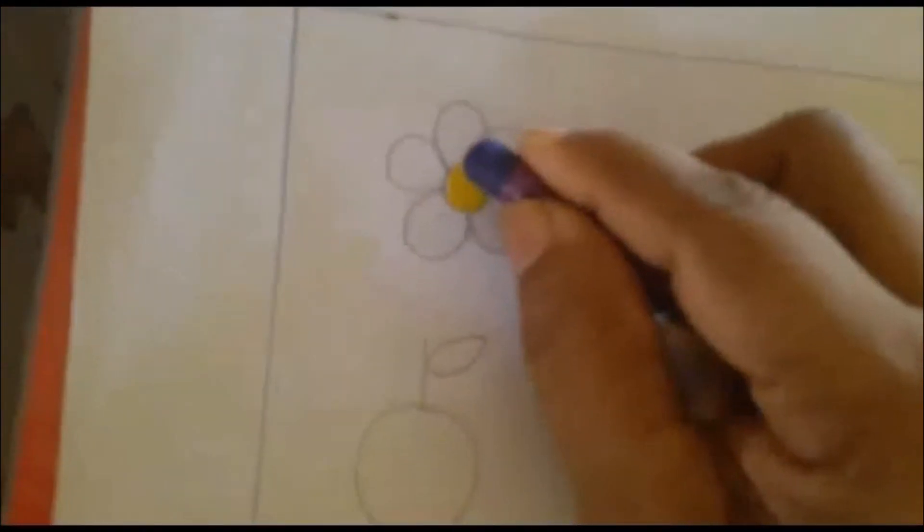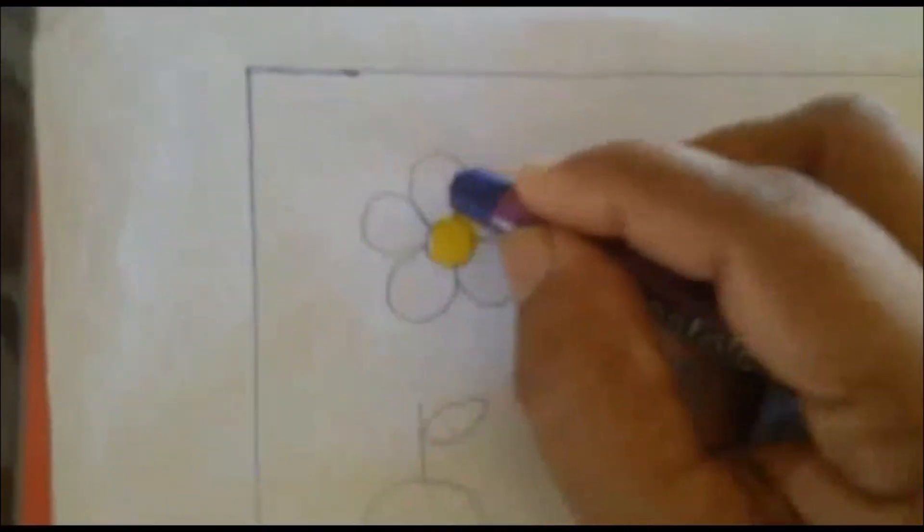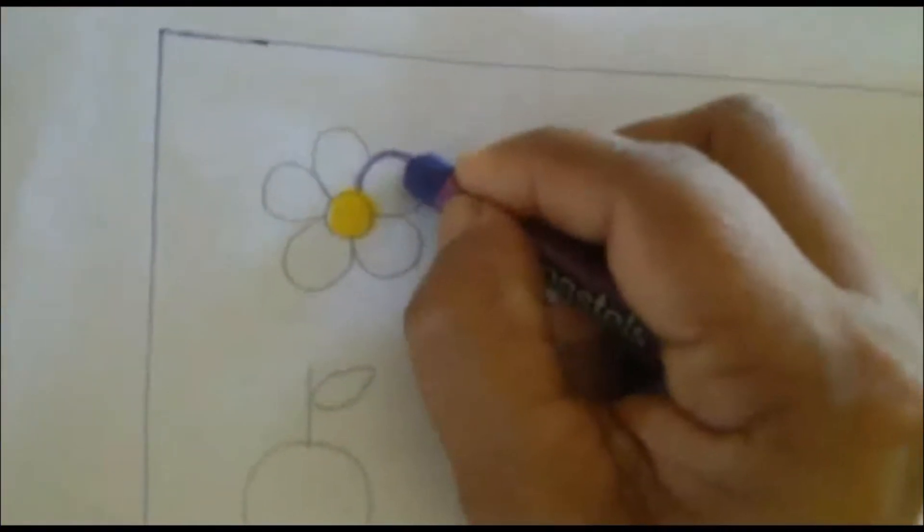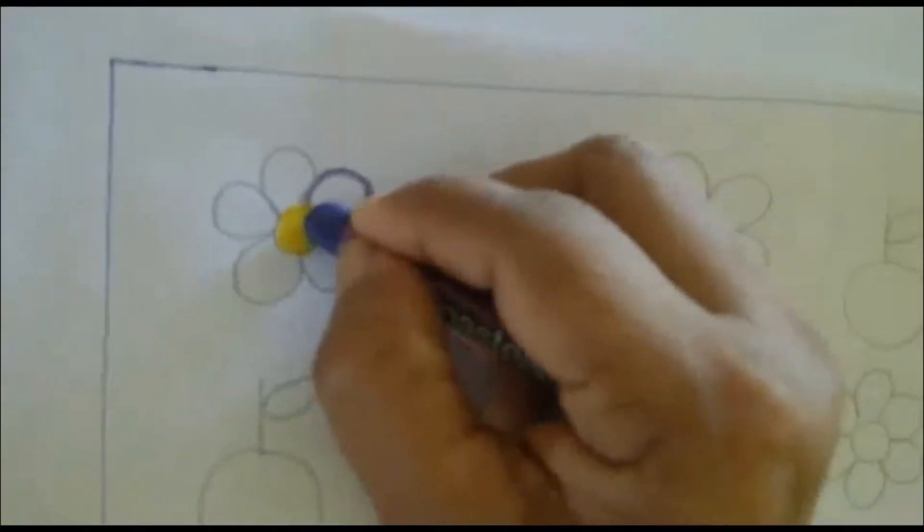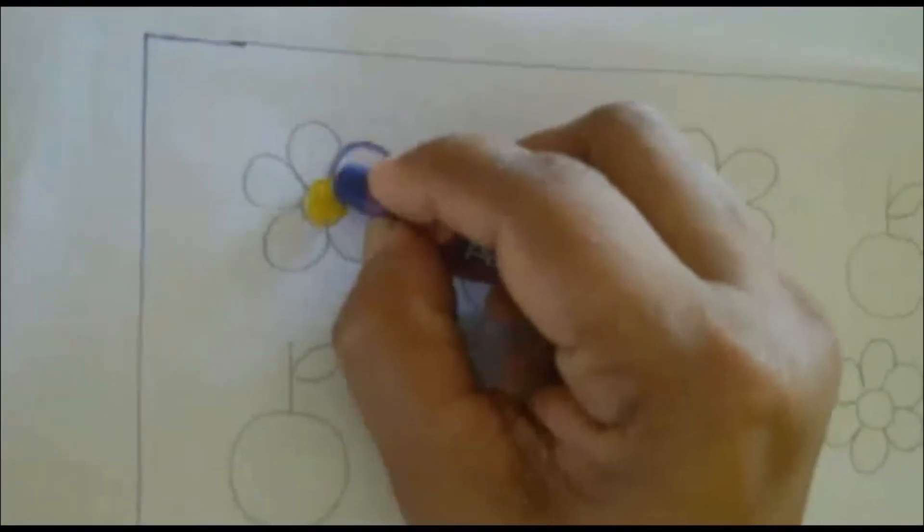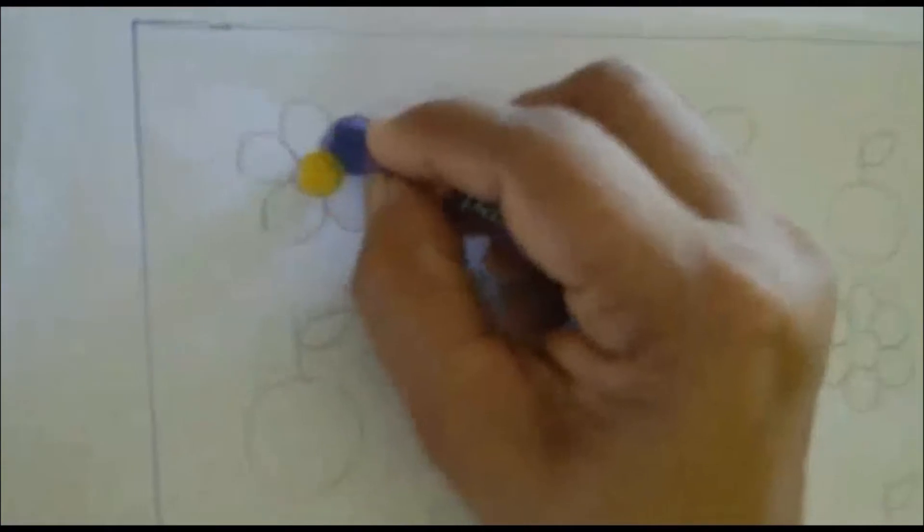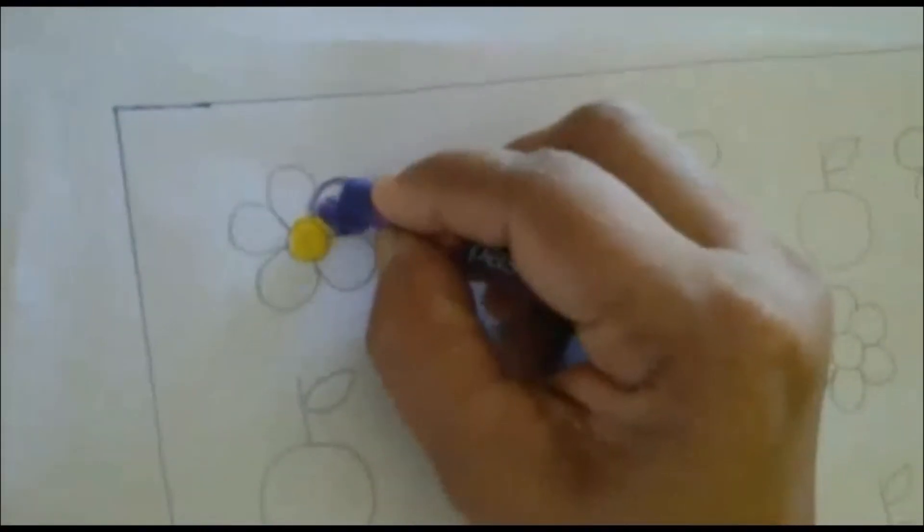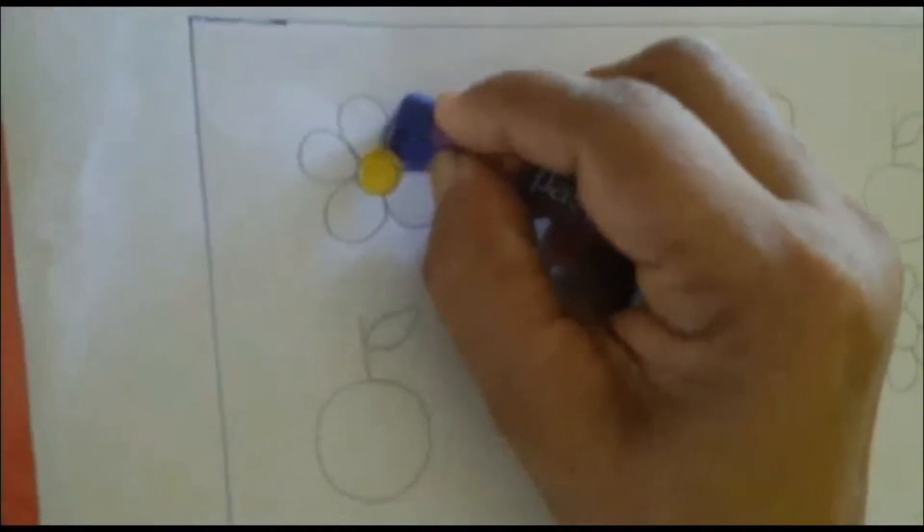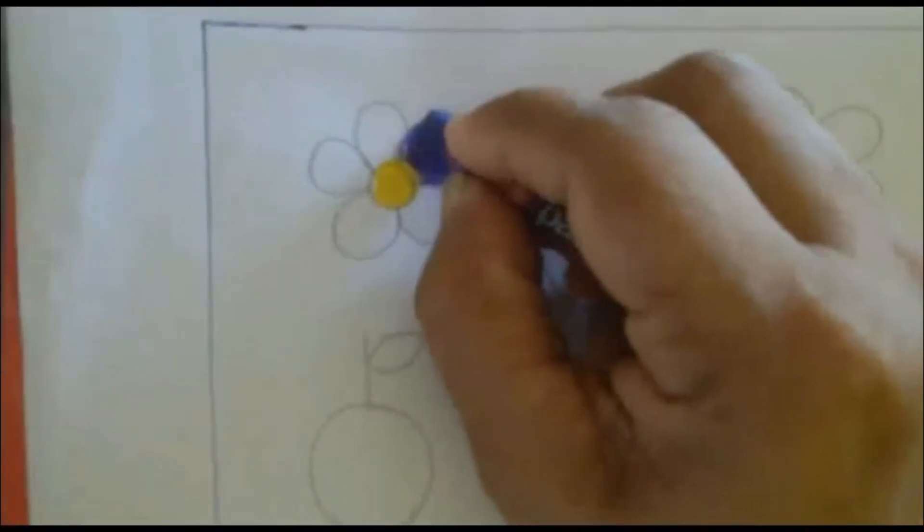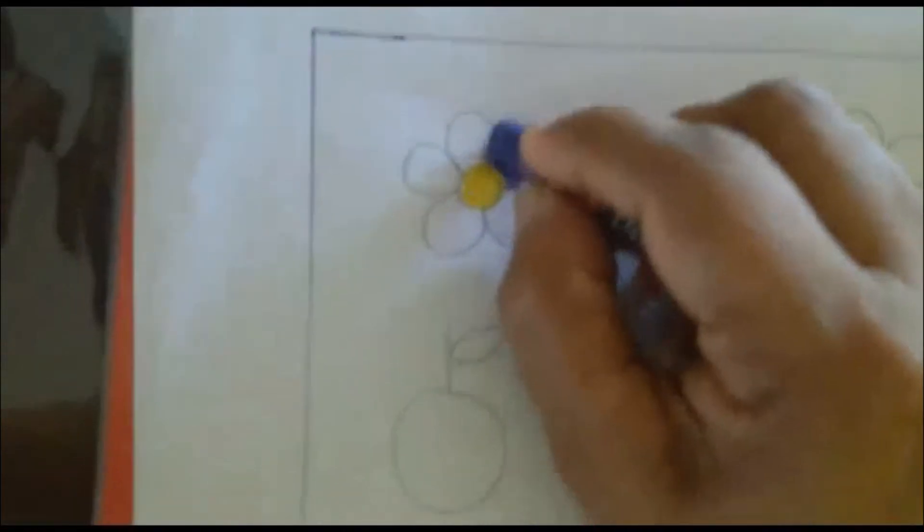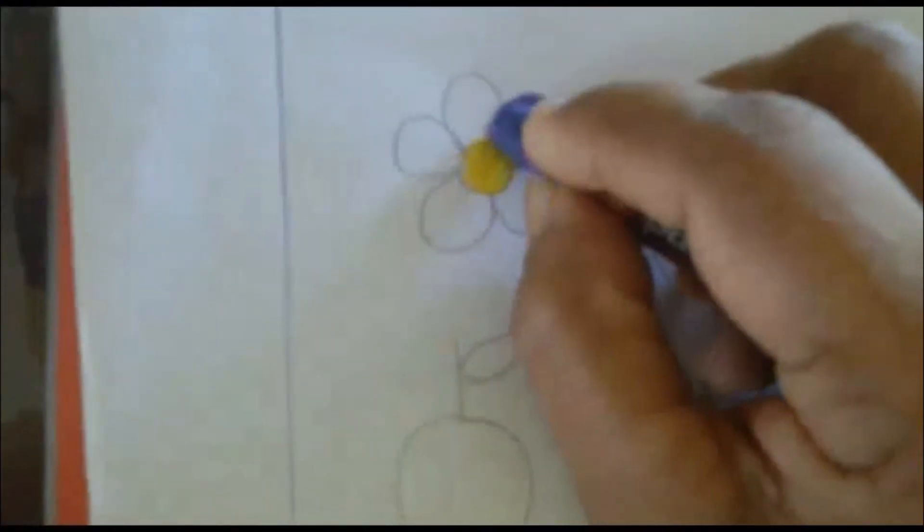Next step, you are going to color the petals, petal by petal. Move your hand left to right. Do your work very neatly and clearly.